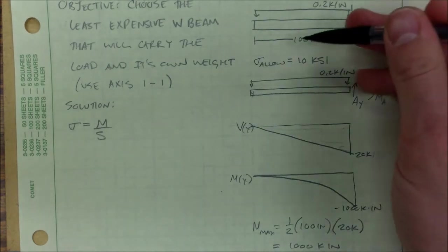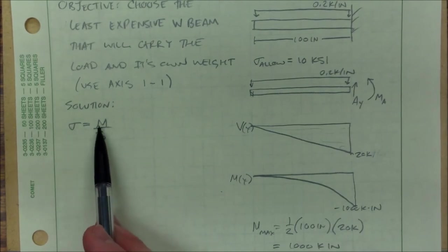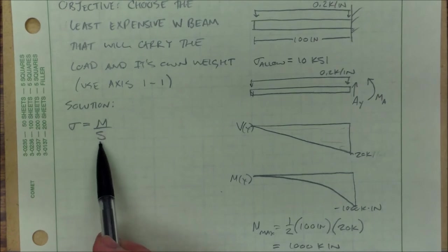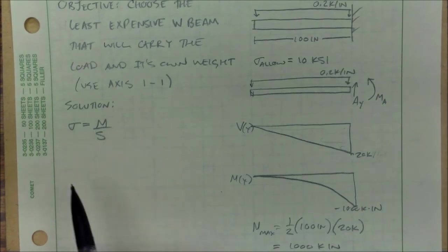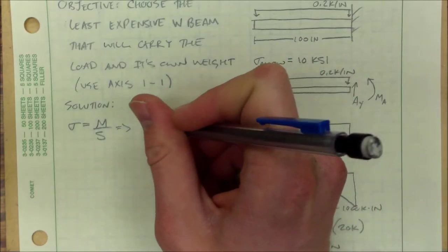Without the additional weight of the beam, this is what my moment is going to be. What that means for my section modulus is that is the minimum section modulus that I can possibly have, and keep up just the load, minus its own weight. So I haven't completed the problem yet. I have to solve this for S.